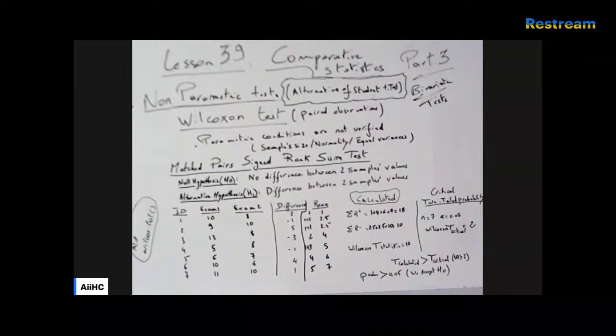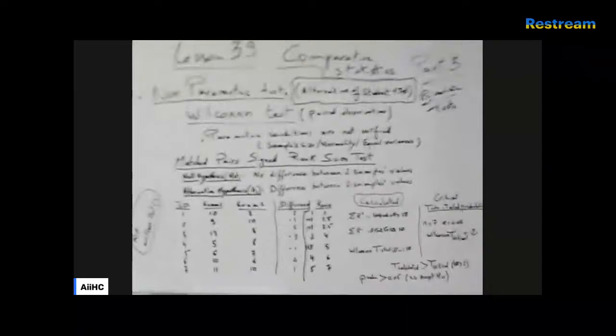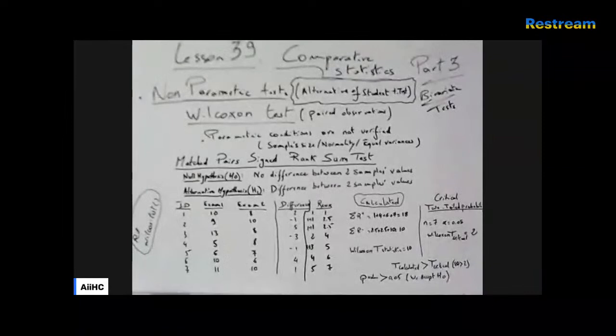We always have a null hypothesis H0: there is no difference between the two sample values. The alternative hypothesis H1 states that there is a difference between the two sample values. Let's take a concrete example.